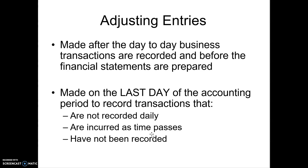So these adjusting entries — what we're learning in this chapter — we're picking up right at the end, right after we've prepared that trial balance. We are going to make adjusting entries to record transactions that have occurred in this period: revenue that has been earned or expenses that have been incurred, that happened in this period but we haven't recorded yet. They're not recorded daily; they incur as time passes. We're standing on the last day of the period looking back, asking if there's any other revenue or expenses from this period that we've got to get recorded now.